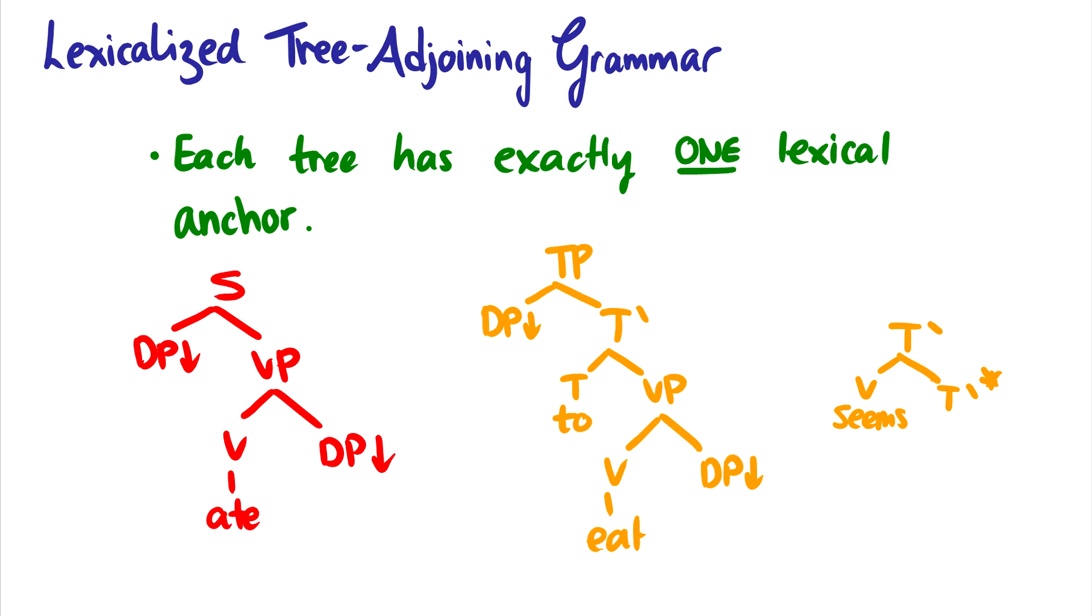Okay, so lexicalized tree adjoining grammar. We say with this that each tree has exactly one lexical anchor. So all initial trees and auxiliary trees must have one lexical anchor. So on the left tree here, this is a tree for 'ate'. And there's two things to note: one, there's only one word in this tree, which is all we want. But in our tree, we also want room for all of its arguments. So whether it be theta criterion, or just the fact that 'ate' is transitive so it needs two arguments, that means that we have a slot for the DP object and a slot for the DP subject. So this is a fine initial tree for a lexicalized tree adjoining grammar.